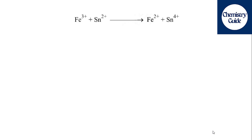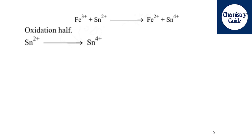The first is the oxidation half. From the above redox equation, the oxidation half is Sn²⁺ on the left side and Sn⁴⁺ on the right side. The oxidation state is increasing from Sn²⁺ to Sn⁴⁺, and because of this increase in oxidation state, it is the oxidation half.